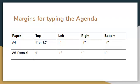Now let's look at the margins for typing the agenda. It can be written on either A4 or A5 paper based on the length. If A5 paper is being used, it must be in the portrait orientation and we can use one inch all around. If using A4 paper, we can have a top margin of one inch or 1.5 inches, with left, right, and bottom margins at one inch.